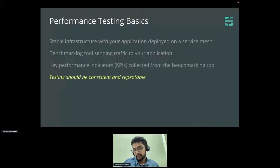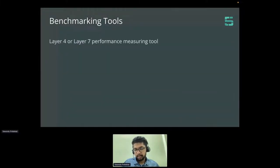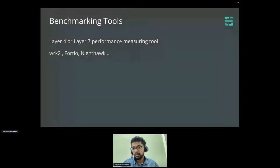A key point to consider is that testing should be consistent and repeatable. We will look at how this is ensured with the Service Mesh Performance specification CNCF project in later slides. Benchmarking tools are basically layer four or layer seven performance measuring tools. Some examples are WRK2, Fortio, and Nighthawk. Fortio is the official load generator for the Istio Service Mesh, and Nighthawk is from the Envoy team at Google.